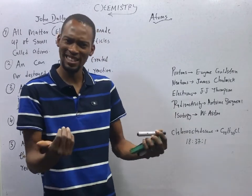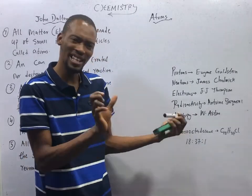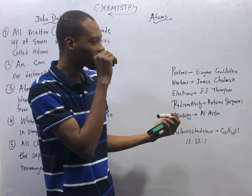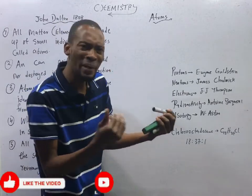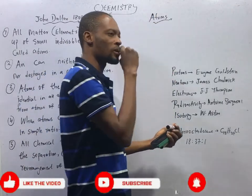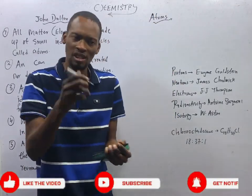And the opposite of matter is energy, which is referred to as anti-matter. What is matter composed of? All matter are composed of atoms. So atoms are the unit of matter.